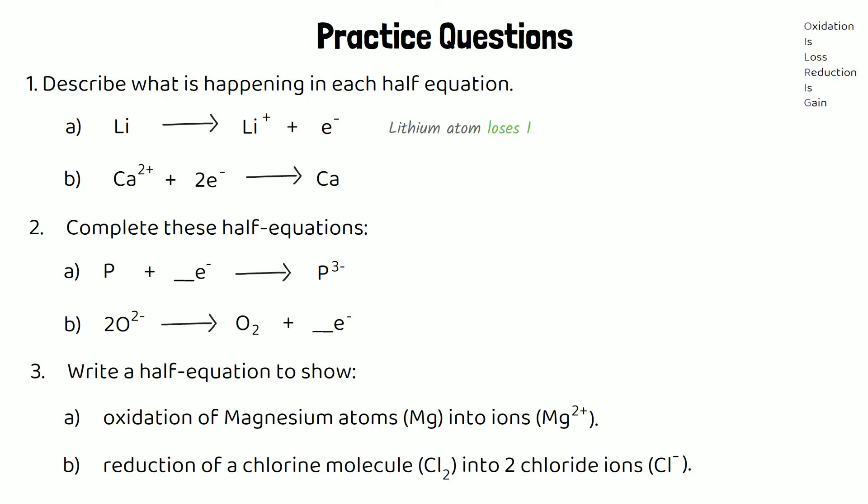The half equation in 1A tells us that a lithium atom loses one electron to form an ion, so we could say that Li is being oxidised. And for part B, a calcium ion gains two electrons to form an atom, so we could say Ca2+ is being reduced.